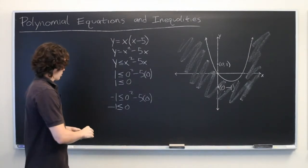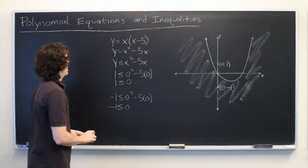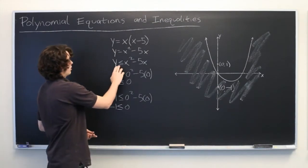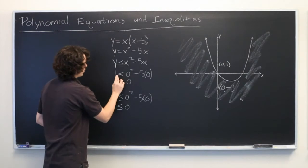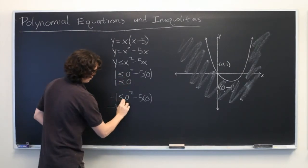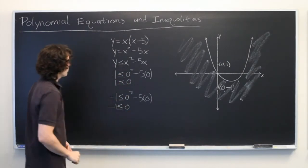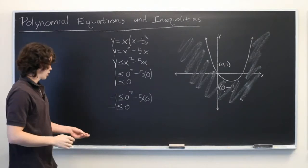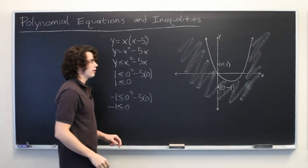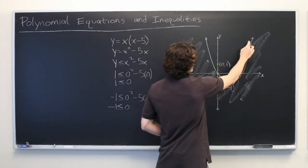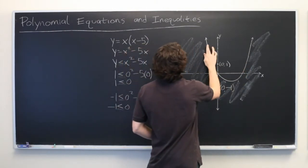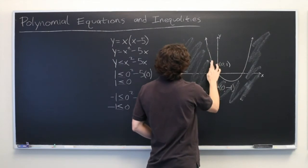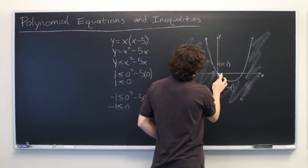Okay, what if instead of an inequality that can be equal, we have a strict inequality like so? It's essentially the same thing. The only difference is that the values that lie along this curve are not valid. And in order to indicate that, the common convention is that we use a dashed line instead of a solid line.